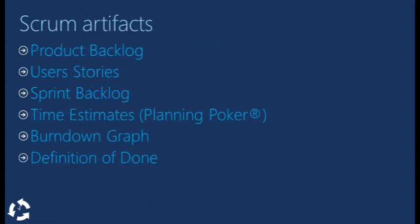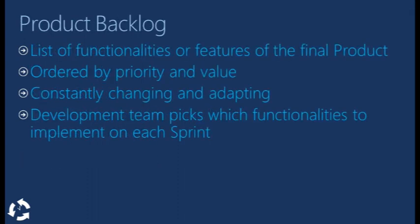Now a quick breakdown of the artifacts. The product backlog contains a list of all the features the final product should have, and it's ordered by priority and value. This priority is determined by the product owner. The backlog is considered a living artifact and keeps changing as the project progresses.